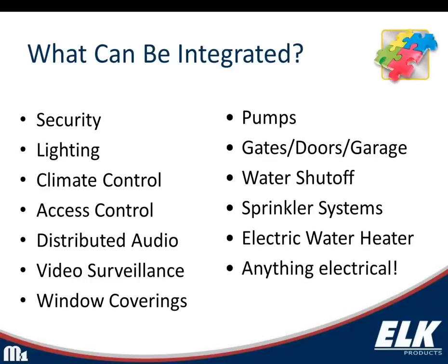Things that can be integrated include sprinkler systems, lighting control, climate, and different thermostats. Think outside the box — maybe pumps, an electrical water heater, a gate, a garage door, or some access control out of the system. There's a lot of things you can do just out of the box with the M1 that you might not have thought you'd be able to work with.